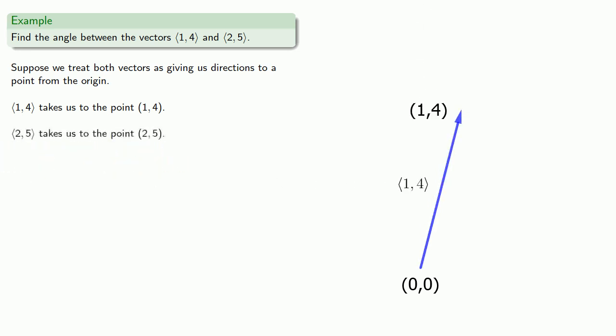And (2,5) will take us to the point with coordinates (2,5). To find the angle between the two vectors, notice that they form two sides of a triangle.